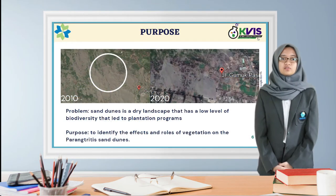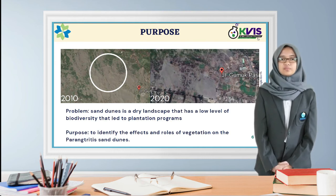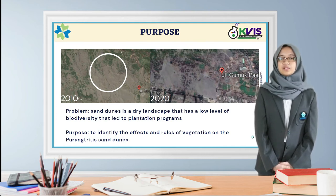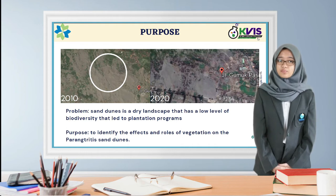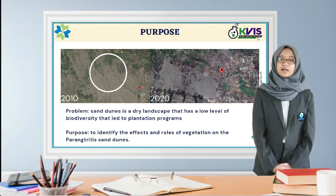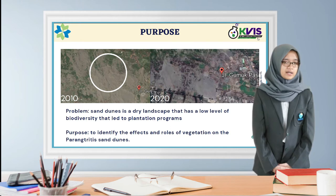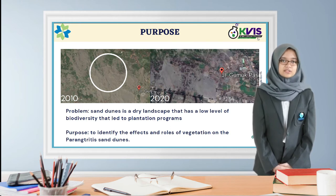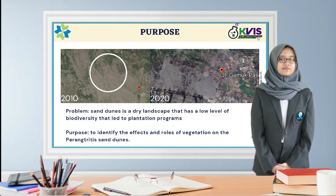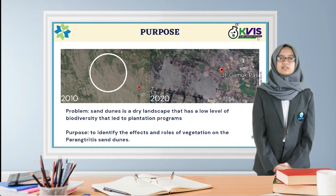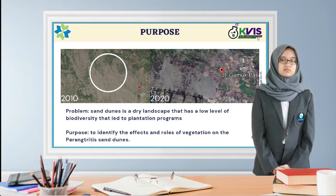Moving on to the next slide, I'd like to tell you the purpose of this research. The problem in our research topic was the plantation program, which was caused by the low level of biodiversity in the dry sand dune area. Thus, the purpose of this research was to identify the effects and roles of vegetation on the sand dune.